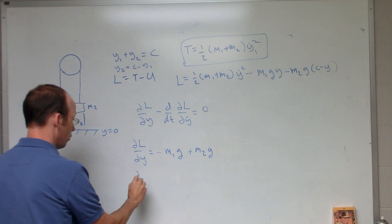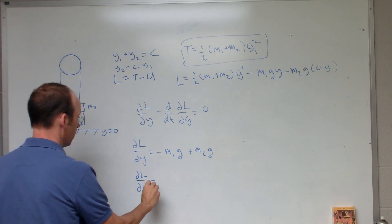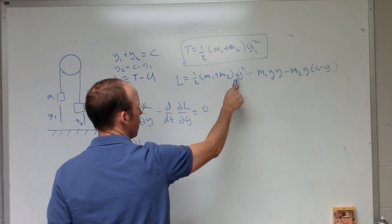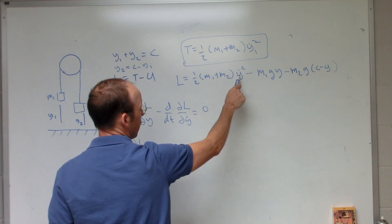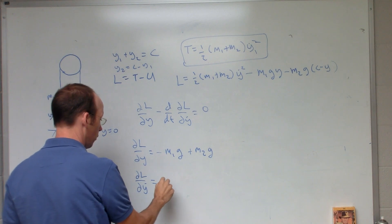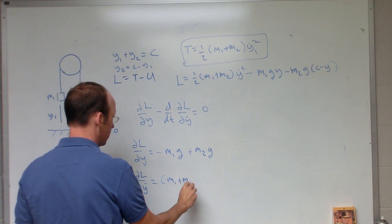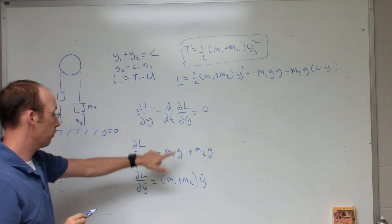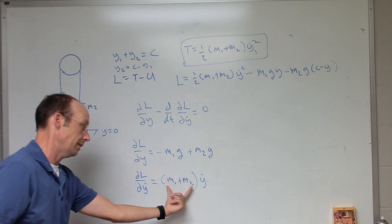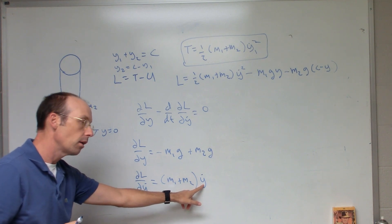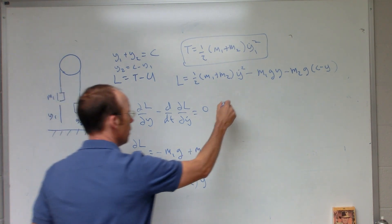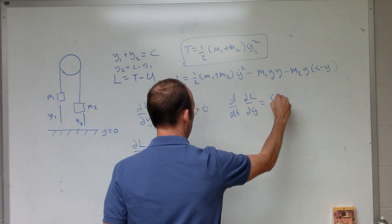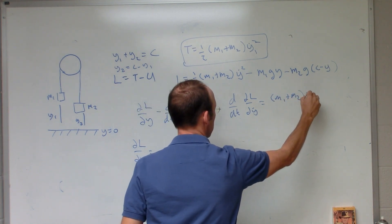Let's do this one. The partial of L with respect to Y dot. There's no Y dots over here. I only have that. So I'm going to get a 2 and then just Y dot. So I get, because M doesn't have a Y dot in it. So I get M1 plus M2 times Y dot. Now I can take the derivative with respect to time of this. And so that's a constant so it doesn't matter. So I just get the derivative of Y dot with respect to time. So I get DDT partial of L with respect to Y dot. It's going to be M1 plus M2 Y double dot.